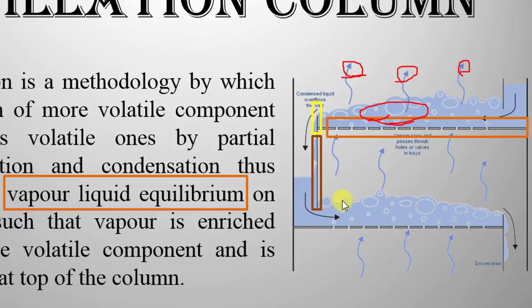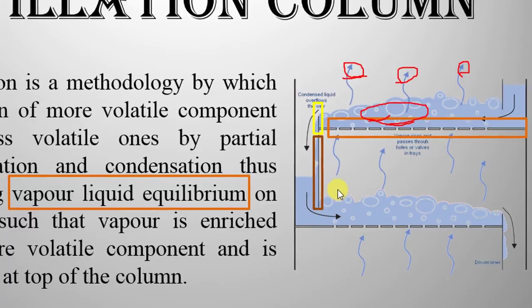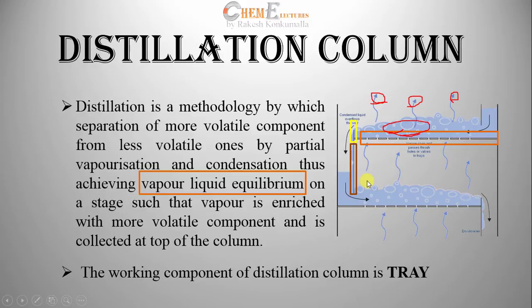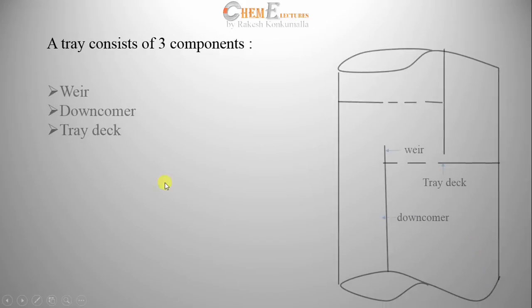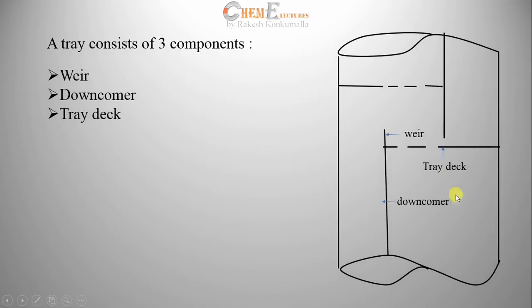The working component of a distillation column is tray. Now let us look in more detail about the components of a distillation column. A tray consists of three components: weir, downcomer, and tray deck.